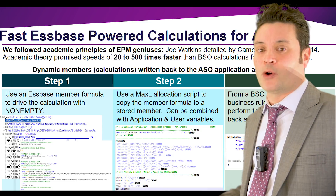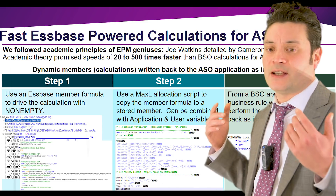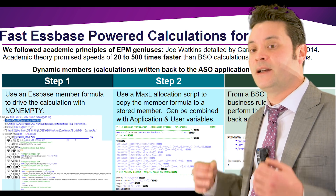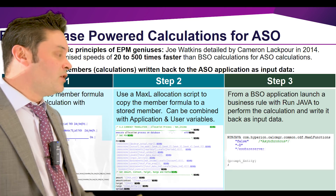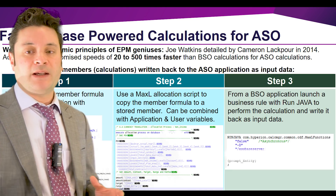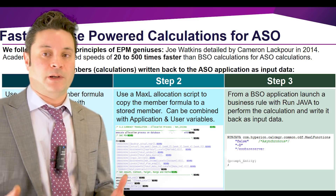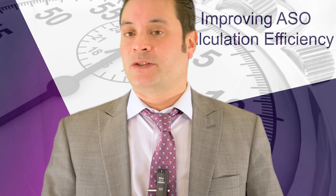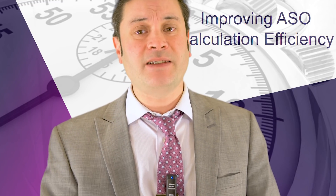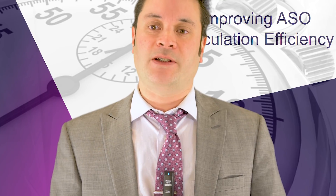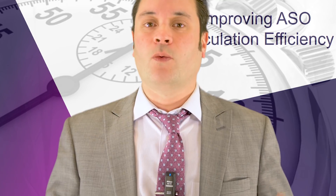Step one uses an S-based formula to drive the calculation with a non-empty tuple. Step two uses a MaxL allocation script to write the member formula back as a stored member. Finally, step three, if you're using planning, would be to launch the MaxL script from a BSO application with RunJava to write that calculation back as input. Now this topic has been covered in past Kscope sessions, but our focus for Kscope 18 will be on the methodology's concepts and syntax to further enhance these principles to achieve the theorized ASO calculation efficiency of what I call warp speed.